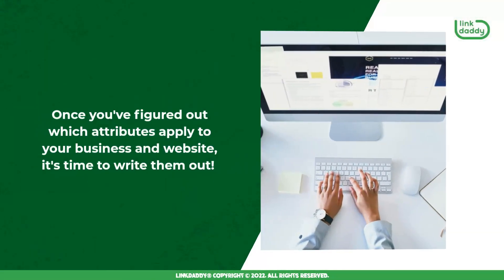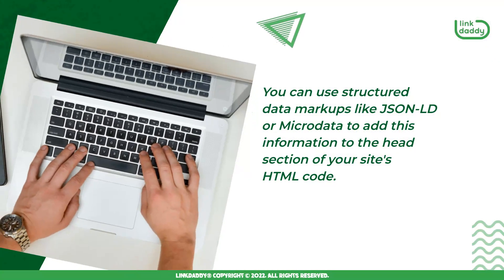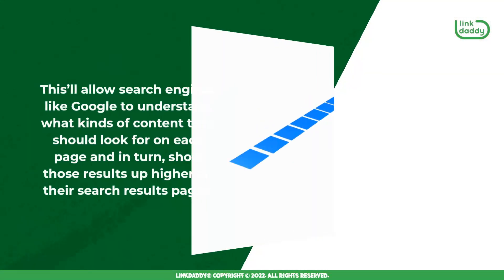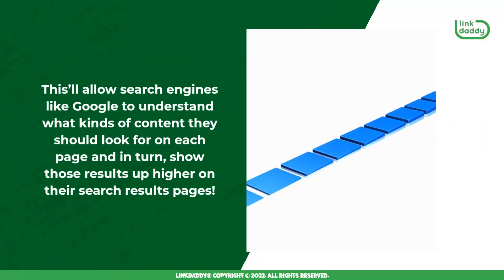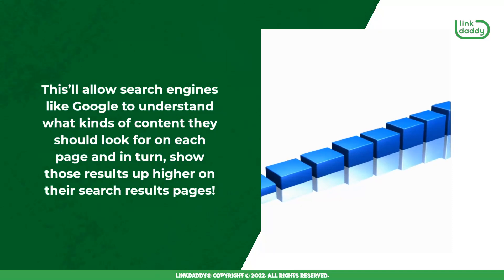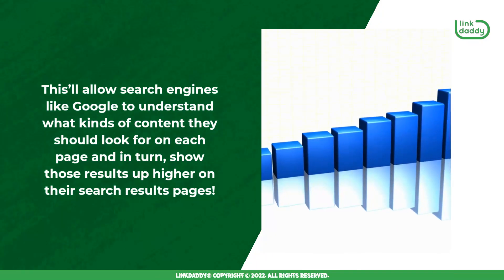Once you've figured out which attributes apply to your business and website, it's time to write them out. You can use structured data markups like JSON-LD or Microdata to add this information to the head section of your site's HTML code. This will allow search engines like Google to understand what kinds of content they should look for on each page and, in turn, show those results higher on their search results pages.